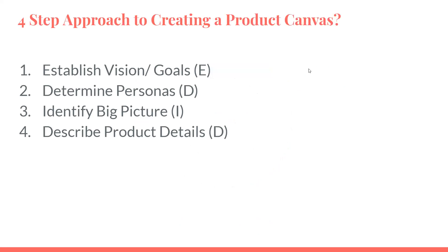Here are four simple steps for creating a product canvas. I created a mnemonic: EDED. The first E is establish your vision and goals. The first D is determine your personas. The I is identify the big picture. The second D is describe the product details. Keep EDED in your head as a simple step-by-step and organized way to approach product canvases.